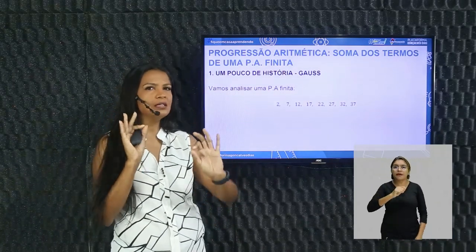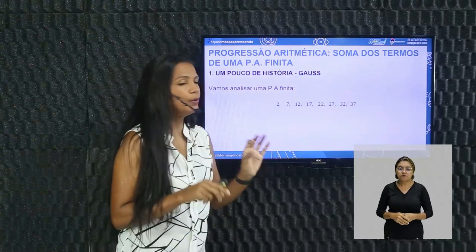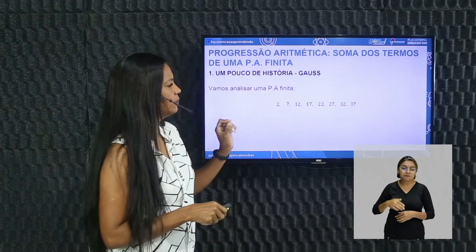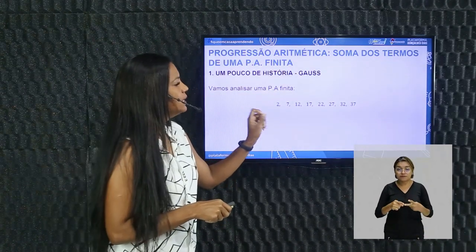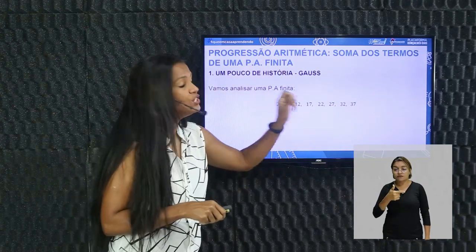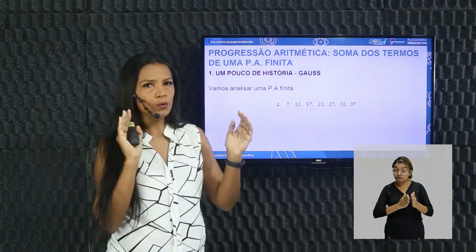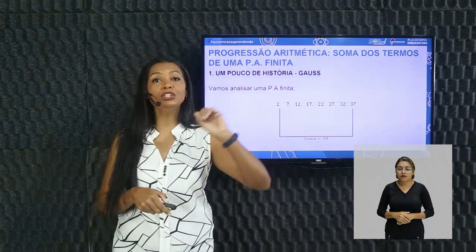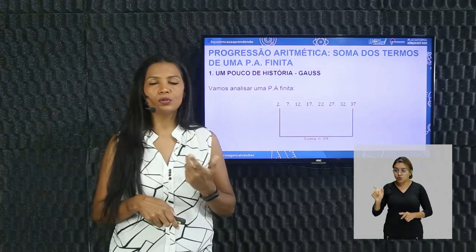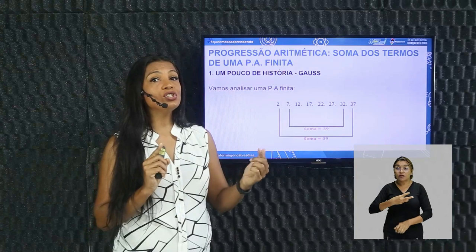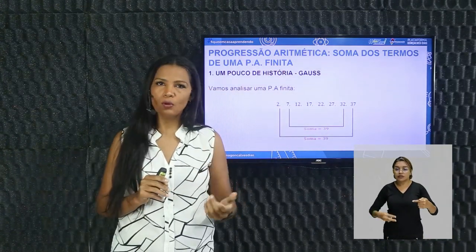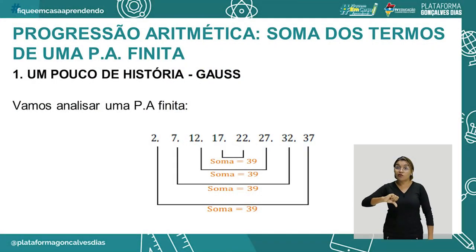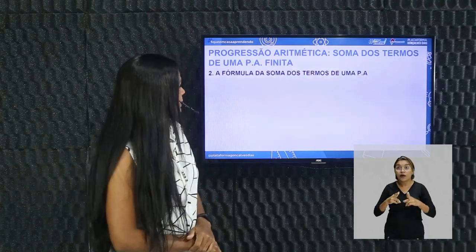Vamos pegar uma PA menor para compreender esse raciocínio: 2, 7, 12, 17, 22, 27, 32 e 37 — uma sequência finita. Vou pegar os extremos: 2 com 37 soma 39. Termos equidistantes: 7 e 32 somam 39; 12 com 27, 39; 17 mais 22, 39 também. Significa dizer que a soma de termos equidistantes coincide com a soma dos extremos.